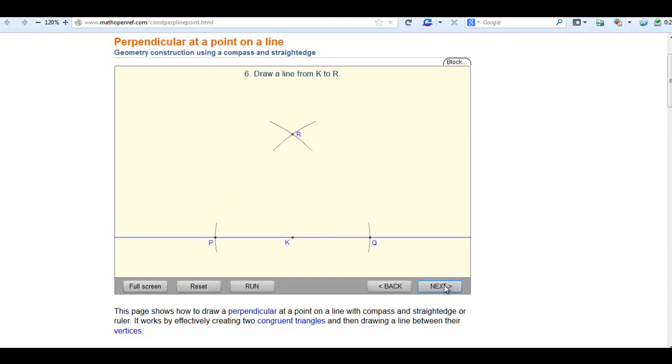Now we connect the point where those arcs intersect and K. And that's it. That creates a perpendicular line.